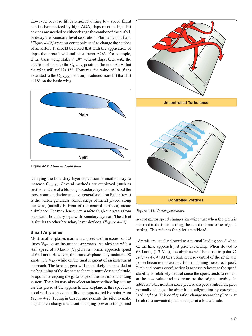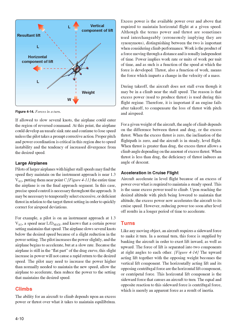Aircraft are usually slowed to a normal landing speed when on final approach just prior to landing. When slowed to 65 knots (1.3 VSO), the airplane will be close to a point of neutral stability, and precise control of pitch and power becomes more crucial for maintaining the correct speed. Pitch and power coordination is necessary because the speed stability is relatively neutral — the speed tends to remain at the new value rather than return to the original setting. In addition, the pilot normally changes the aircraft's configuration by extending landing flaps, requiring alertness to unwanted pitch changes at low altitude. If allowed to slow several knots, the airplane could enter the region of reversed command and develop an unsafe sink rate and continue to lose speed unless the pilot takes prompt corrective action.